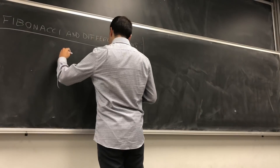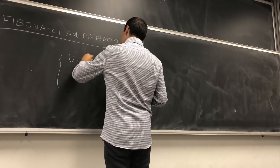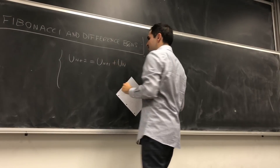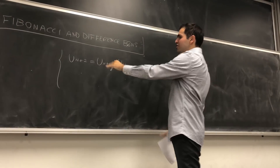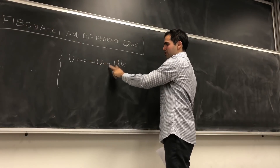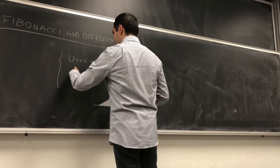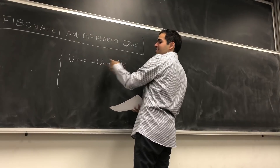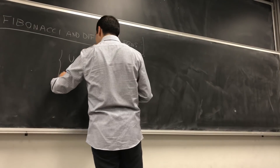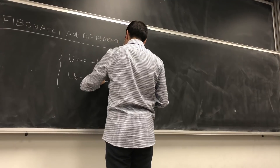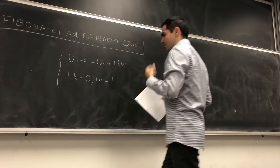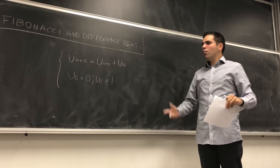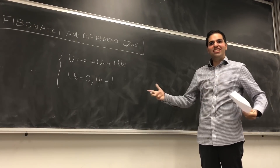Let me recall: u_{n+2} equals u_{n+1} plus u_n. The future is given by the sum of the next two terms, or in other words, the present is given by the sum of the two past terms. The initial conditions are u_0 equals 0 and u_1 equals 1.